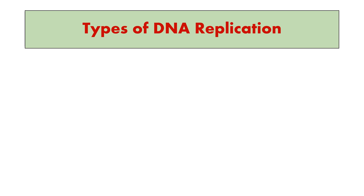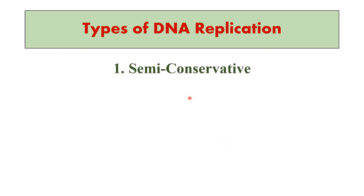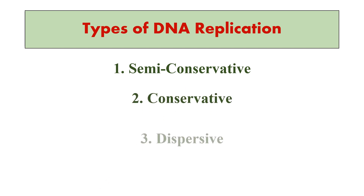There are three types of DNA replication. First is the semi-conservative type of replication. Second is the conservative type of replication. And third is the dispersive type of replication.